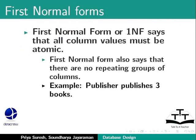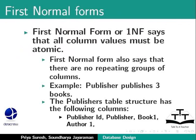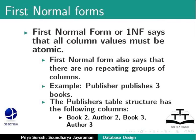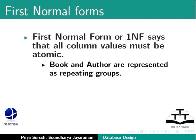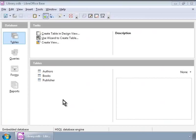As an example, we will suppose that a publisher has published three books and the publisher's table structure has the following columns: Publisher ID, Publisher, Book 1, Author 1, Book 2, Author 2, Book 3, Author 3. Notice the repeating groups — Book and Author repeated three times. So if we see such repeating groups, we should revisit our design. Now, if the publisher publishes 10 more books, we are forced to change the table structure by adding 20 columns. So we see that the table design is not stable as data changes. Also, searching and sorting the table by book or author will become cumbersome.